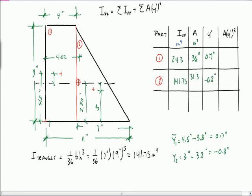So minus 0.8 inches. Because we're squaring y prime, the negative sign will go away. So when you take 36 times 0.7 squared, you get 17.64. And this is going to be inches to the 4th. Again, y was in inches. And 31.5 times negative 0.8 squared is 20.16.